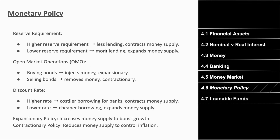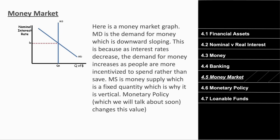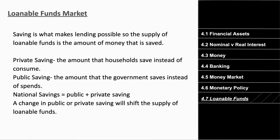Expansionary tools include a lower reserve requirement, buying bonds through open market operations, and lower discount rates. You need to know whether increasing or decreasing each of these mechanisms expands or contracts the money supply, and what to do given an expanding or contracting economy.